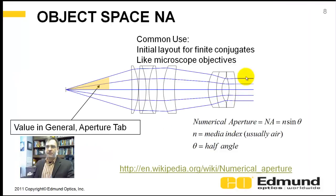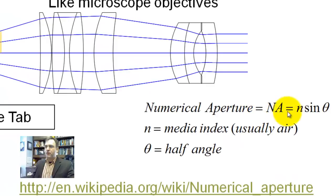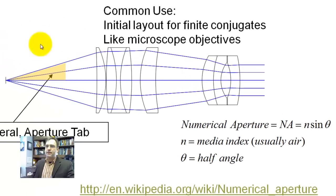The other one is object space numerical aperture. Numerical aperture is defined as N sine theta, where N is the index in the object space. Usually, air index will be one. And this theta is the half angle.